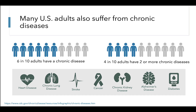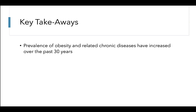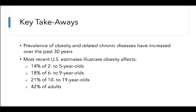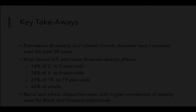So overall, the data and information presented in this lecture illustrate that the prevalence of obesity and related chronic diseases has increased significantly over the past three decades. Most recent U.S. estimates illustrate that obesity affects significant proportions of all age groups, including 14% of 2 to 5-year-olds, 18% of 6 to 9-year-olds, 21% of 10 to 19-year-olds, and 42% of adults. We also see sociodemographic disparities in the prevalence of obesity, with higher prevalence among adults and children who identify as Black or Hispanic. Thank you for learning with me.